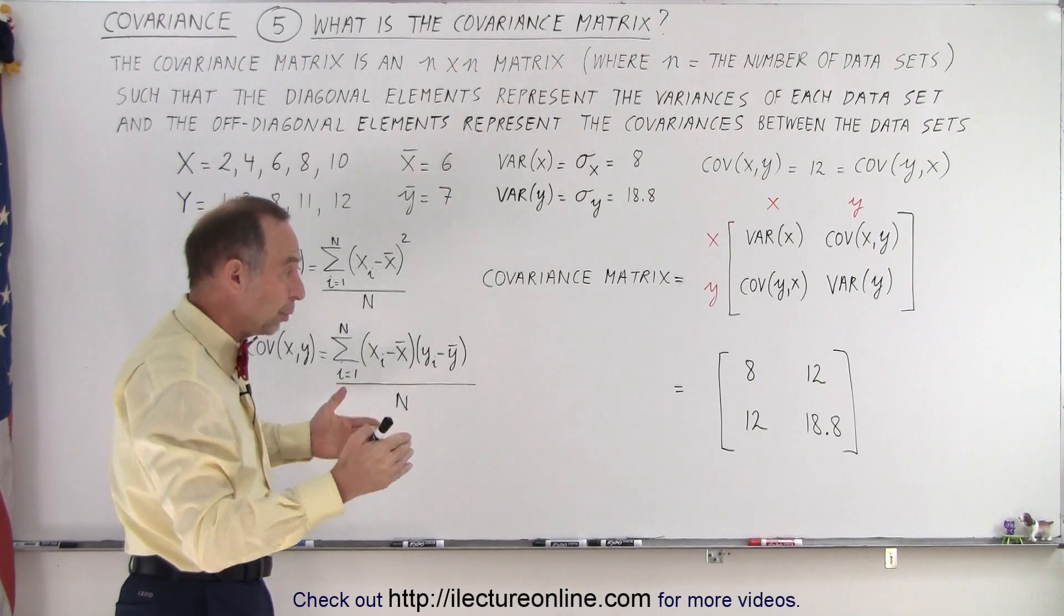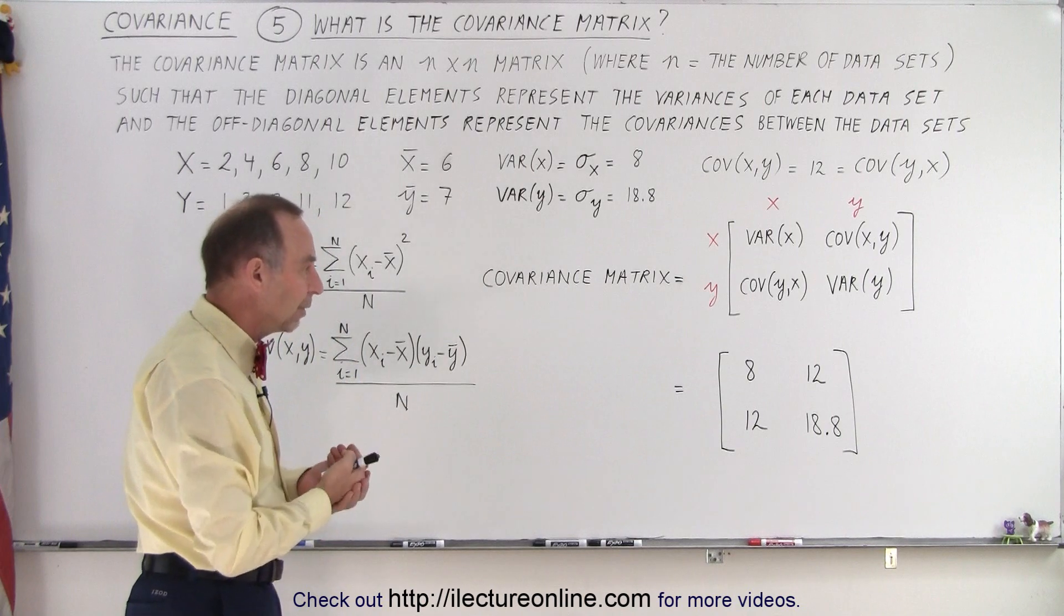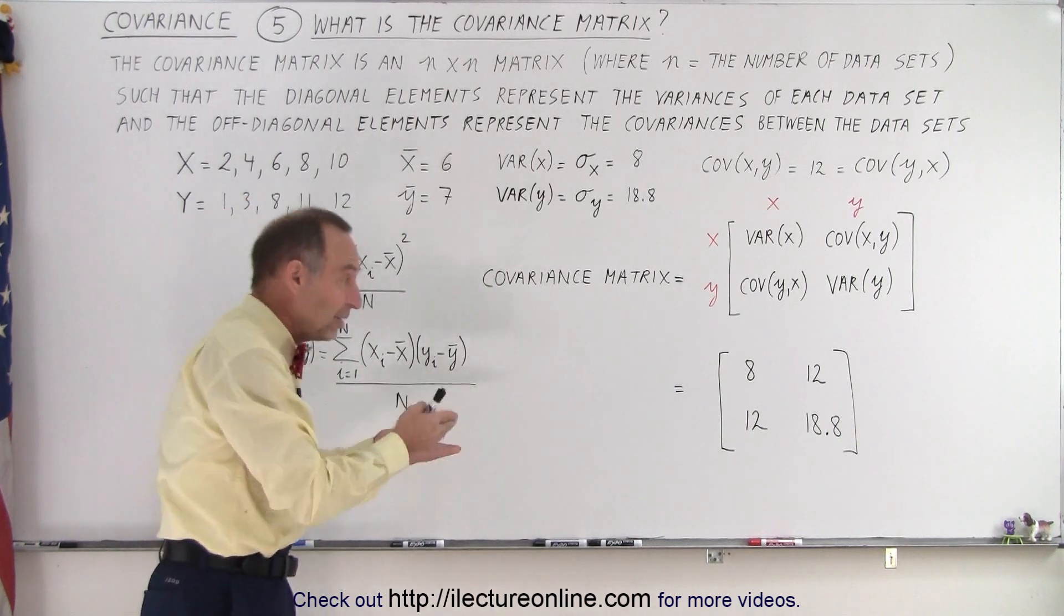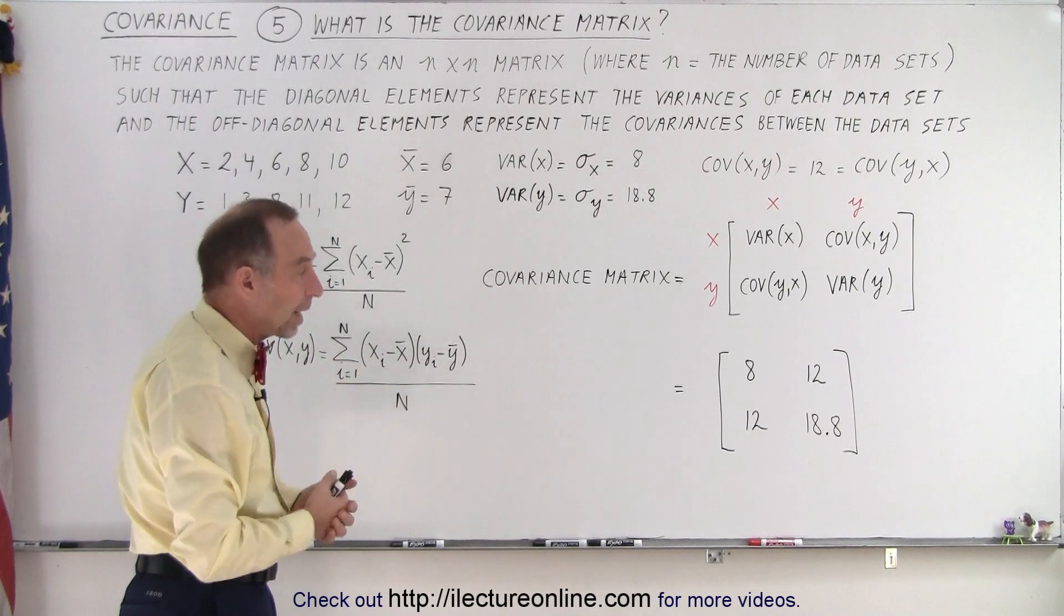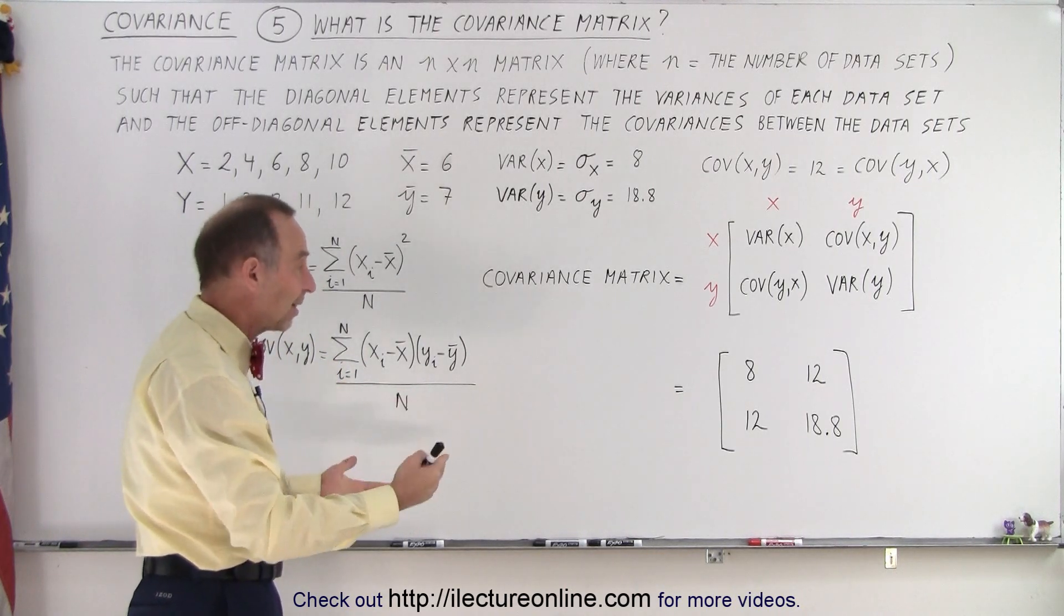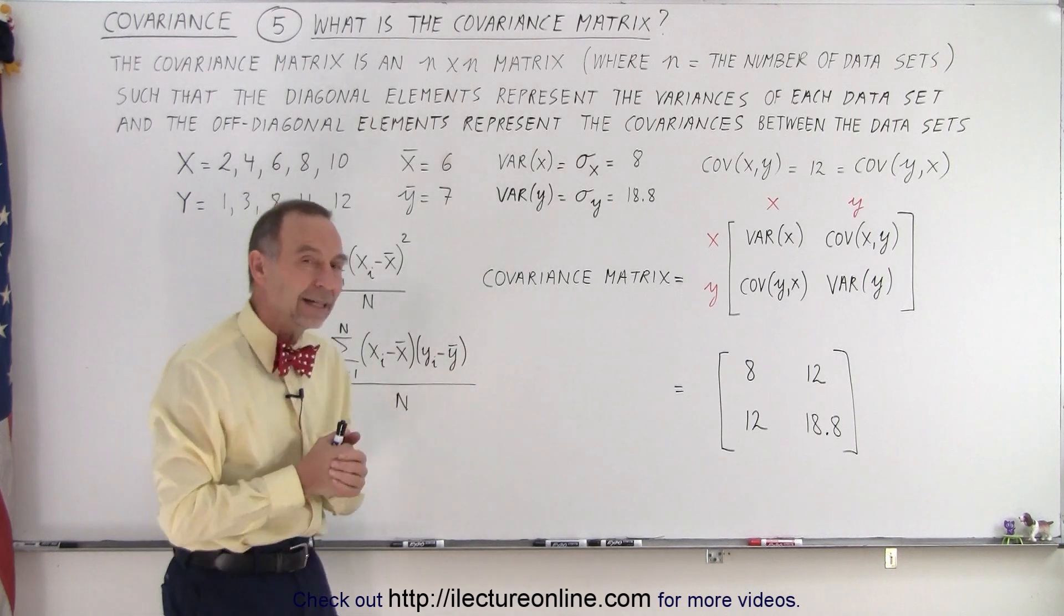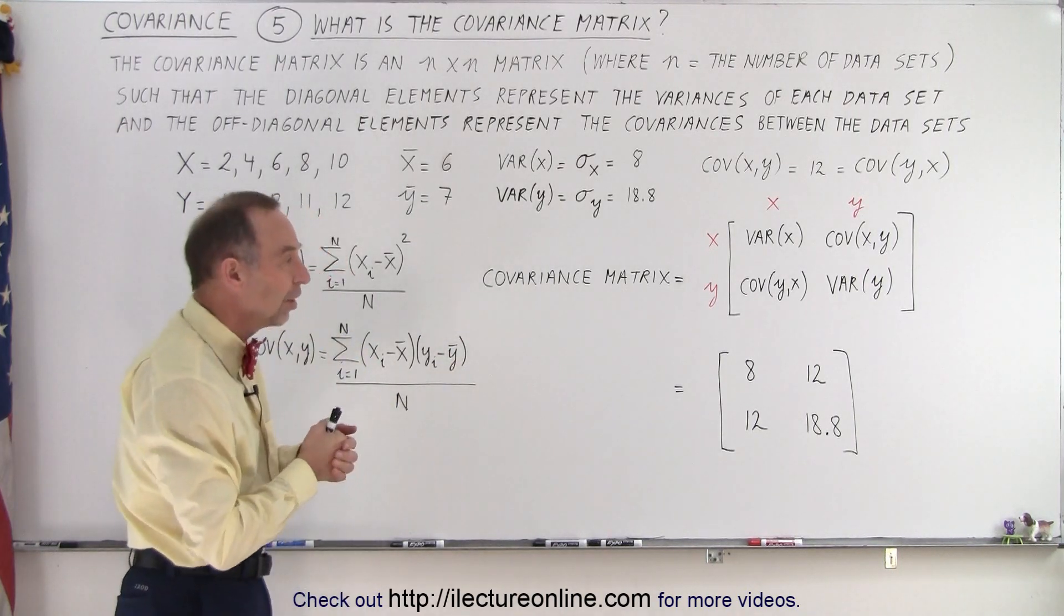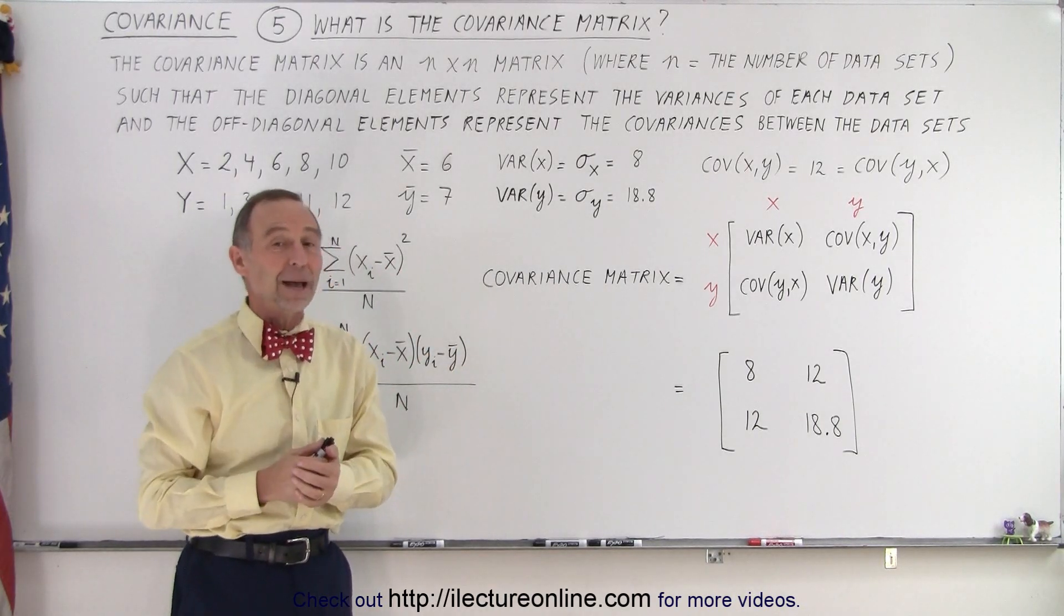The reason why we put these in matrices is because sometimes we use matrix algorithms to calculate certain results. These are used in tracking algorithms when we try to track satellites, missiles, or planes. We use these covariance matrices, and that's why we put them in a matrix - it's more useful in that format.